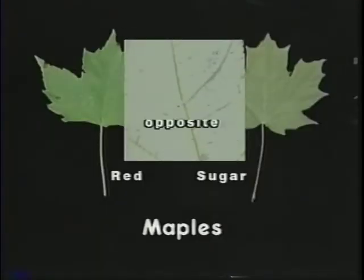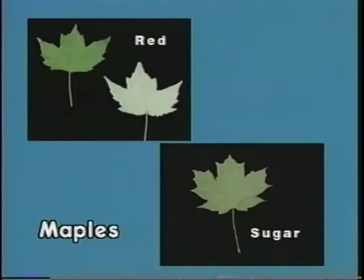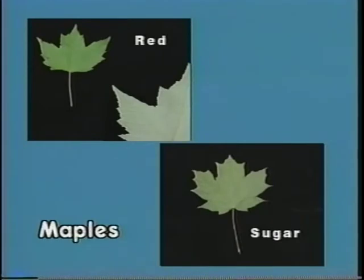Both the sugar and red maple have opposite branching and leaf arrangement. Both are roughly six inches in size, and normally the sugar maple will be the larger of the two. The two maple shapes are referred to as lobed. Sugar maple has five lobes with each of the sinuses forming a U, while red maple has three lobes and sinuses that form a V. The margins of the sugar maple lobes are entire, and red maple being serrated. A final characteristic is color: sugar maple will normally be a very dark green on the upper surface, and red maple light green.